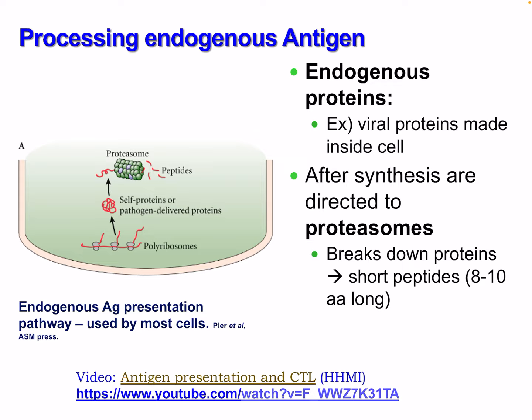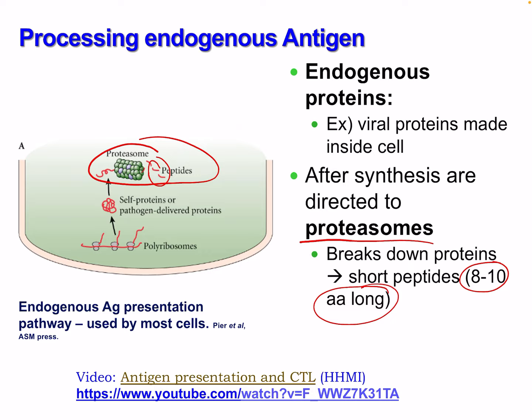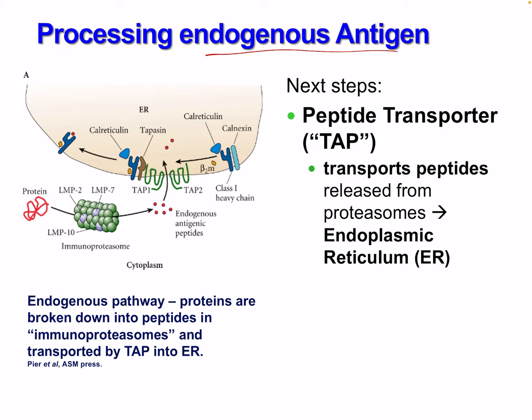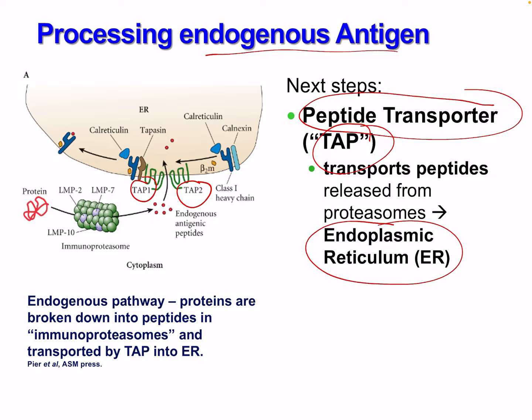Endogenous proteins, like viral proteins made inside a cell, are directed to proteasomes after synthesis. The proteasome breaks proteins down into short eight-to-ten amino acid peptides — small enough to bind into the binding grooves of the MHC. The next step involves a peptide transporter called TAP — TAP1 and TAP2 — which is released from the proteasomes and transports peptides to the endoplasmic reticulum.